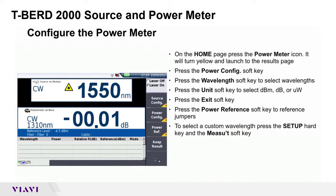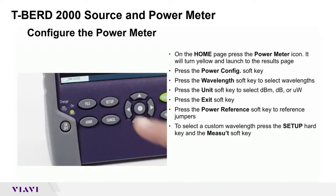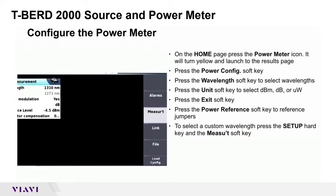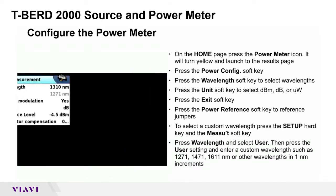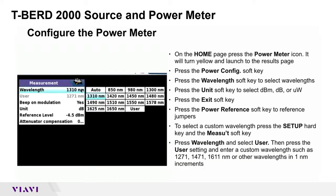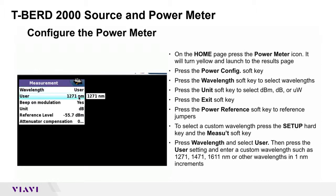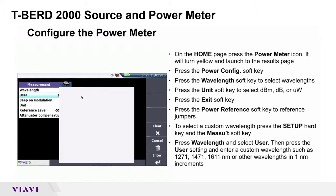To select a custom wavelength, press the Setup hard key and the Measurement soft key. Press Wavelength, select User, then press the User setting and enter a custom wavelength.